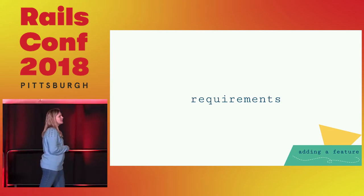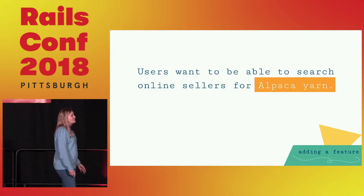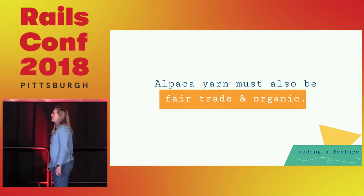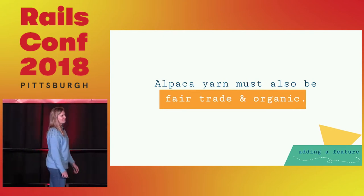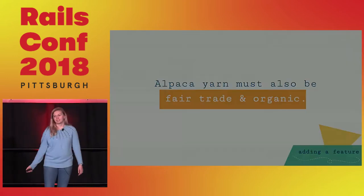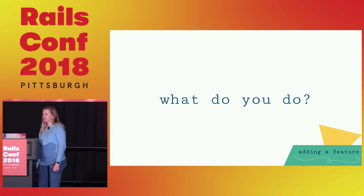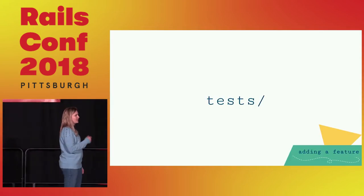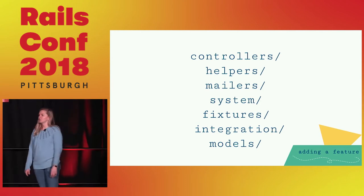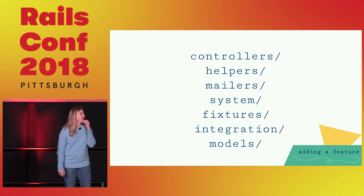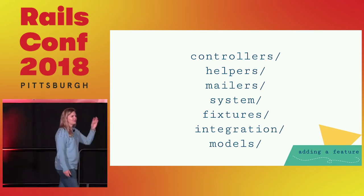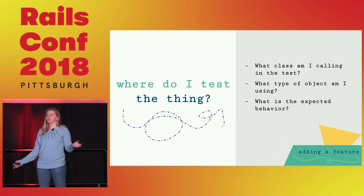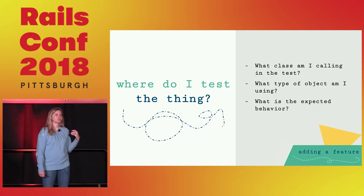In this part of the talk we're discussing adding a feature. Here are the requirements: users want to be able to search our application for online sellers that sell alpaca yarn. That alpaca yarn also needs to be fair trade and organic. So what do you do? First, look at the tests. Tests are a great place to start. In Rails you already have a built-in test directory with subdirectories for controllers, mailers, systems, and models. Think about what kind of object you'd be calling and what it will do.